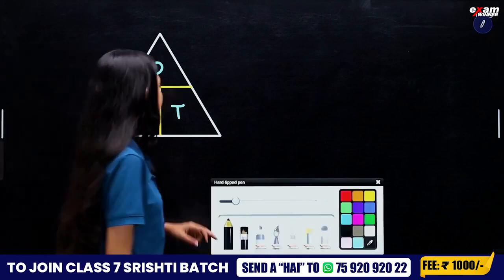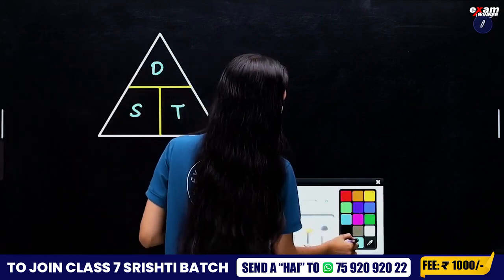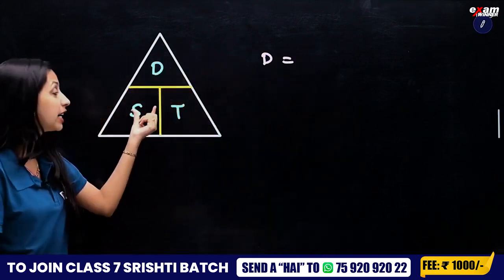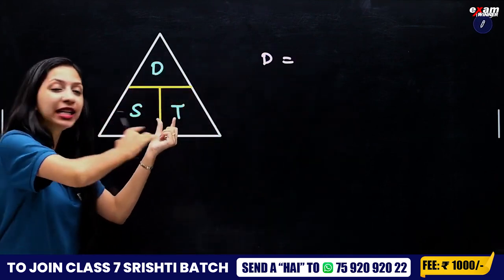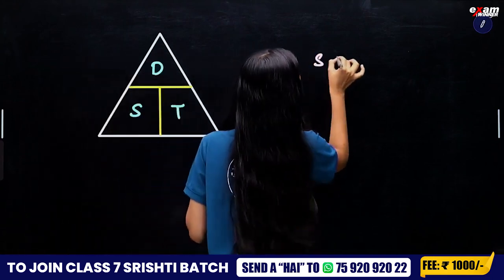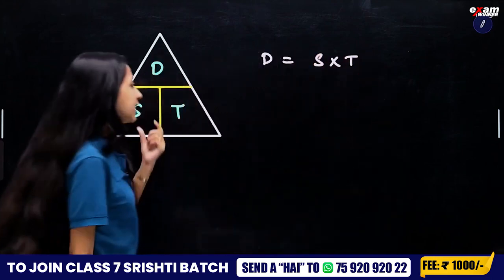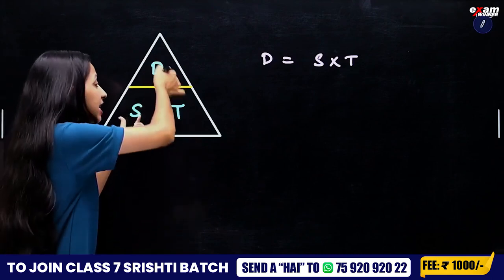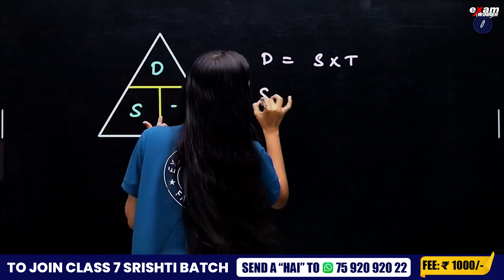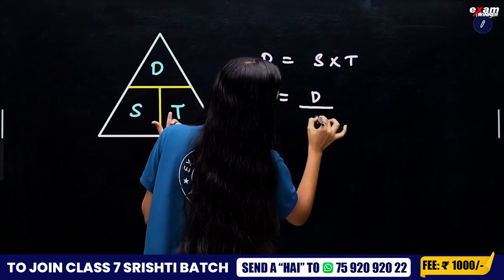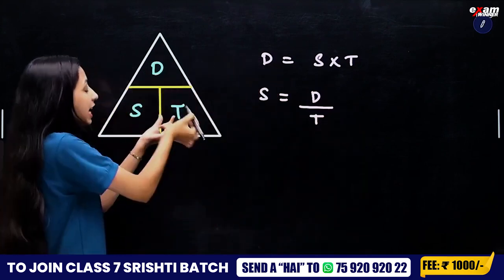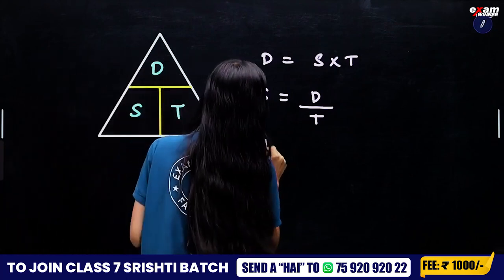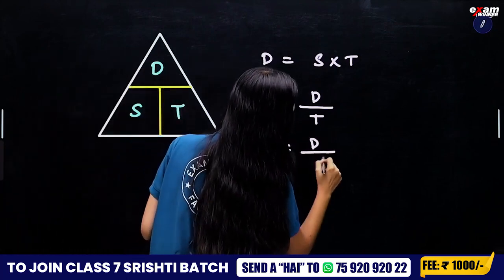What is the distance? The distance is mainly speed into time. Speed means distance divided by time. Time is equal to distance divided by speed.